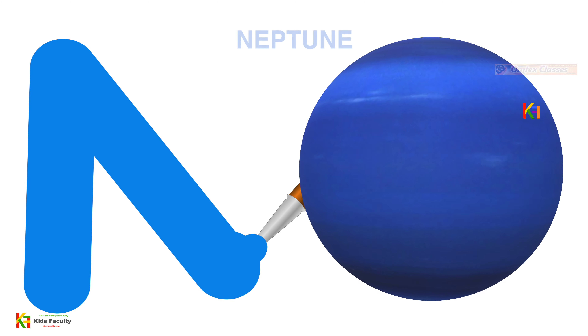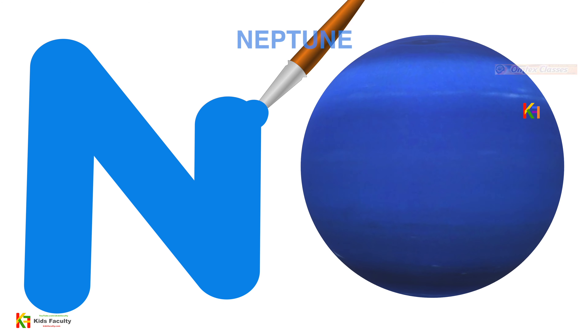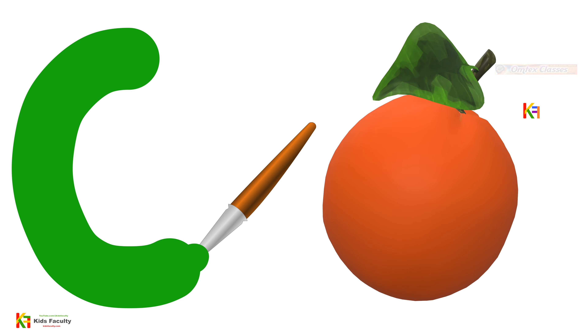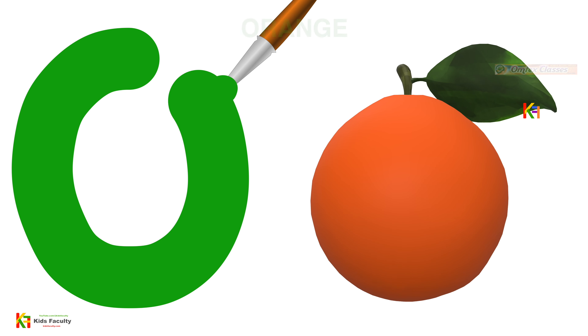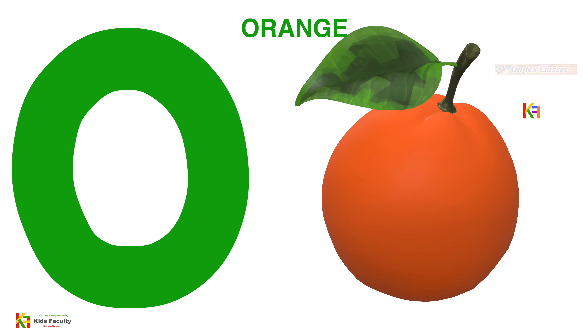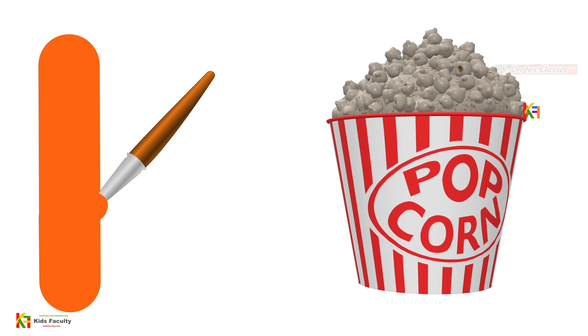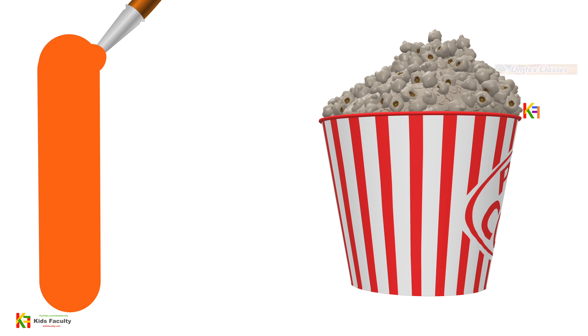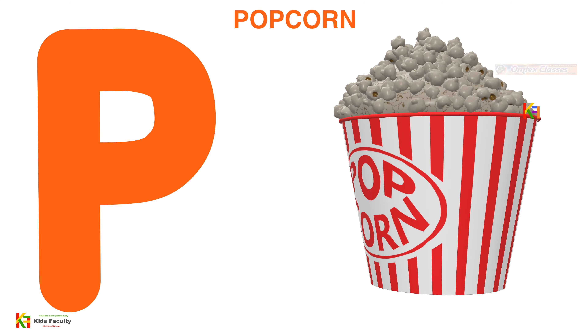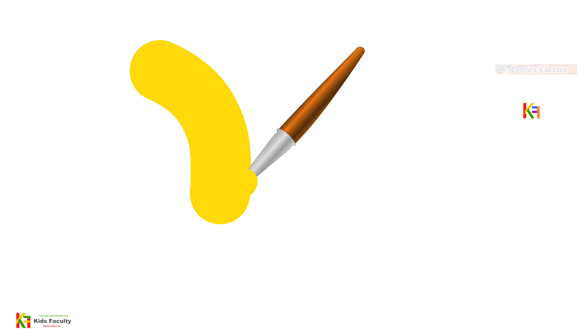A, B, C, D, E, F, G, H, I, J, K, O for orange, Q, R, S, T, U, V, W, X, Y, Z — now I know my ABCs.